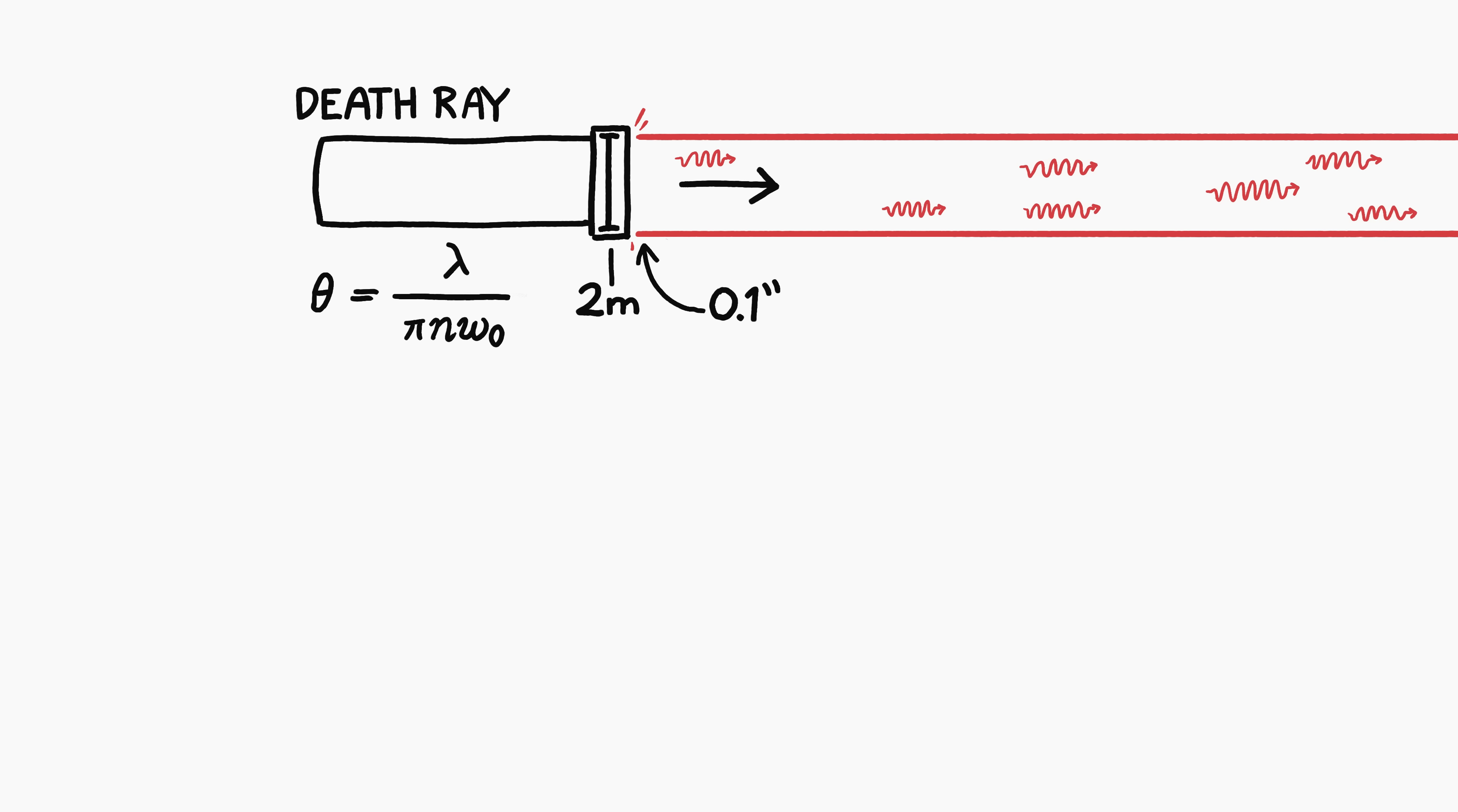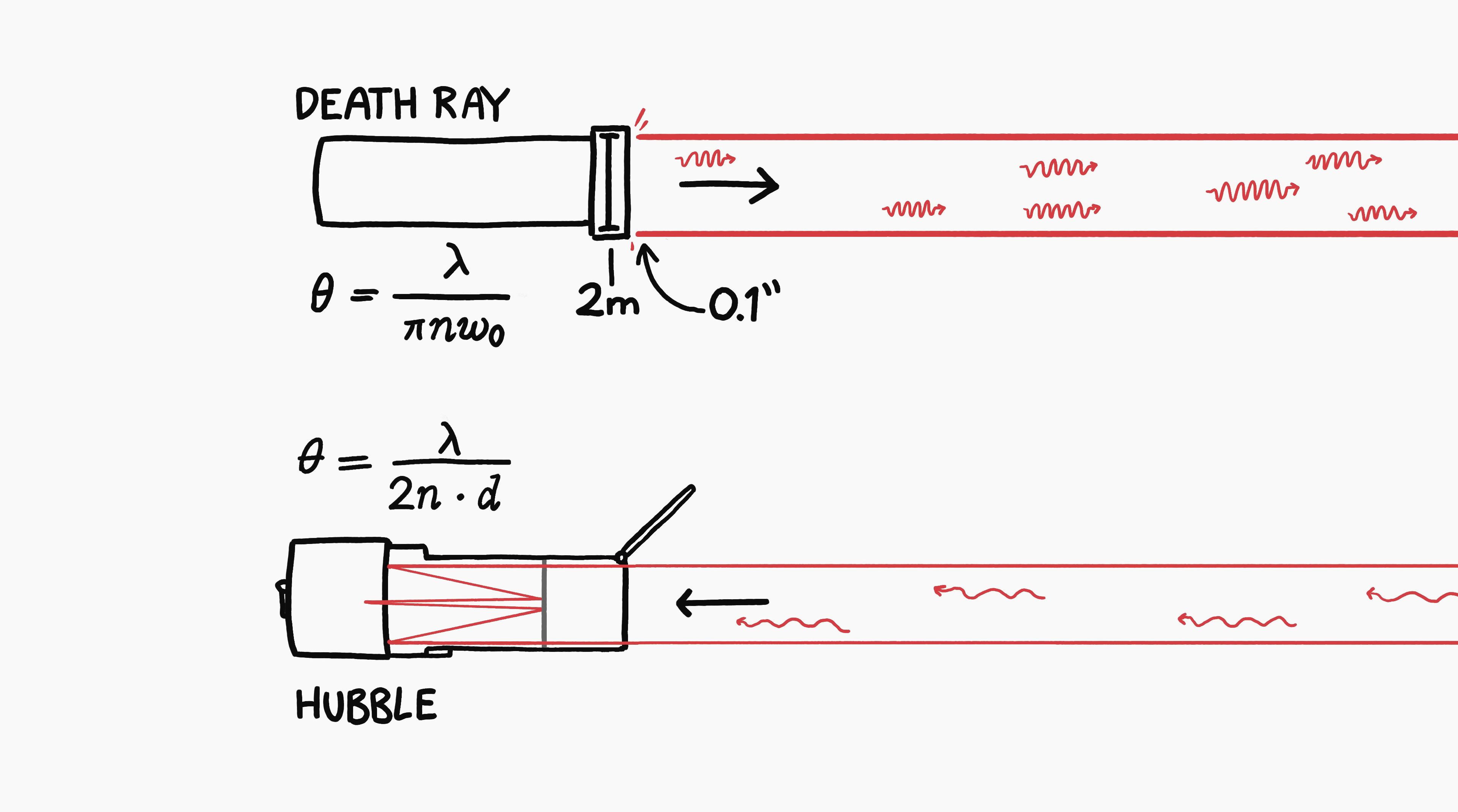The laser beam limit formula is weirdly similar to the formula used to determine the maximum resolution of telescopes like Hubble, because in a sense, a telescope is just a death ray running in reverse. Hubble has a 2.4 meter mirror, and its angular resolution is a little less than 0.1 arcseconds, similar to the angular limit of our 2 meter laser.